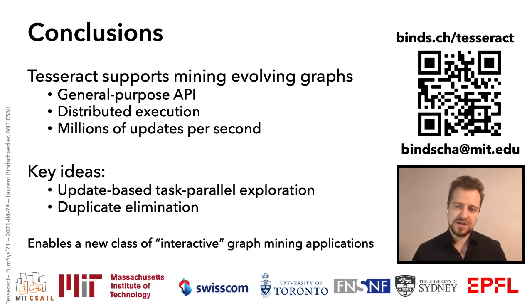So to conclude, I have presented Tesseract, a new incremental graph mining system for evolving graphs. Tesseract provides a general purpose API, it supports distributed execution in a cluster, and it can mine evolving graphs with millions of updates per second. Now, the key ideas in Tesseract are this update-based exploration approach, which can happen in a totally task parallel fashion, thanks to the fact that the system makes processing a single update completely independent of other updates, as well as our various duplicate elimination techniques that support this design. And with this, I'm signing off. Thanks for watching. Bye.